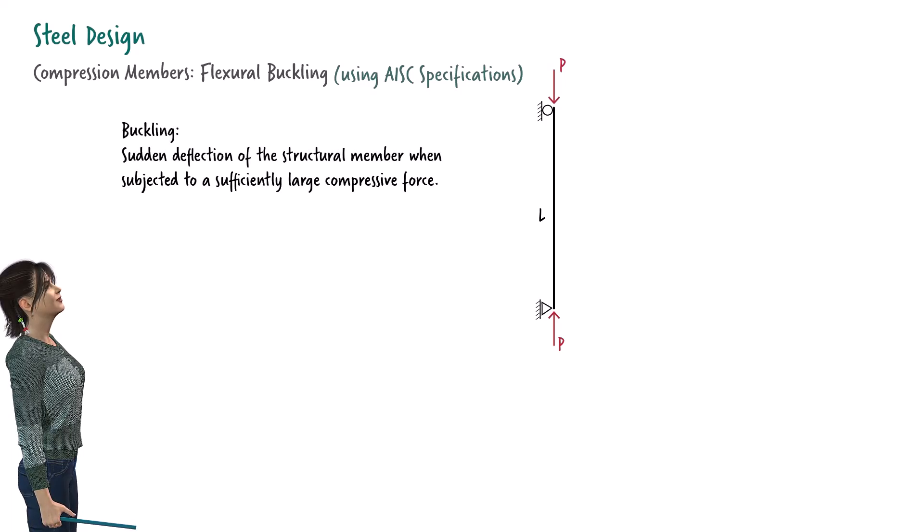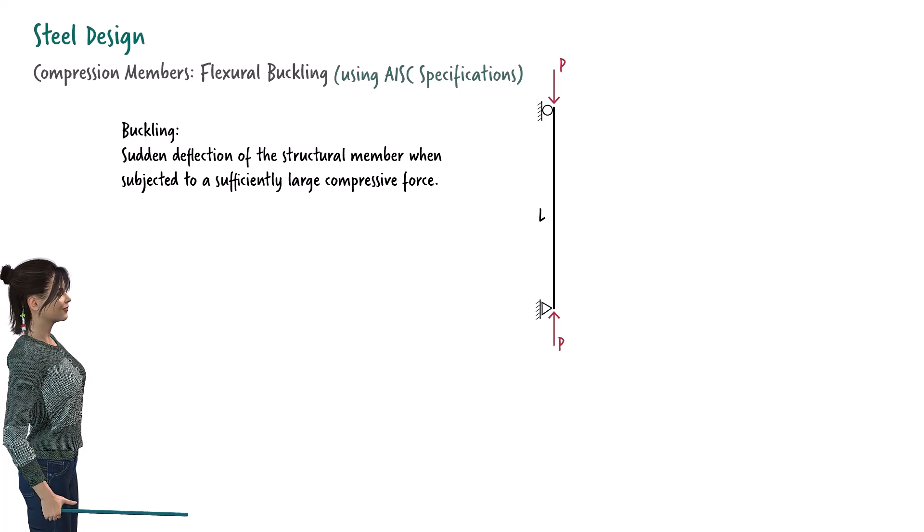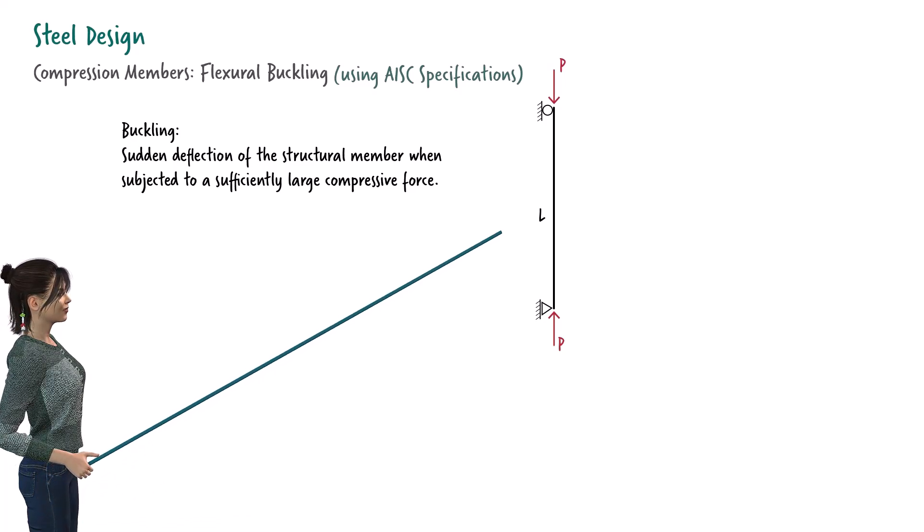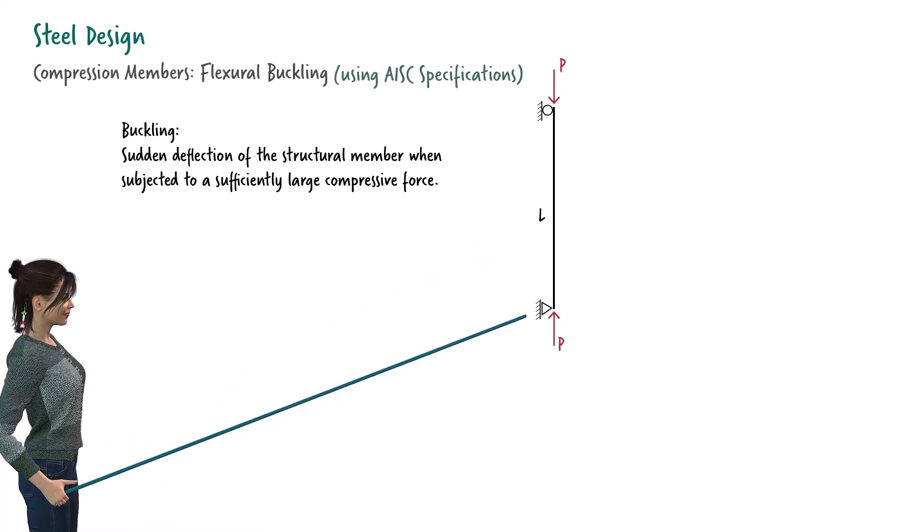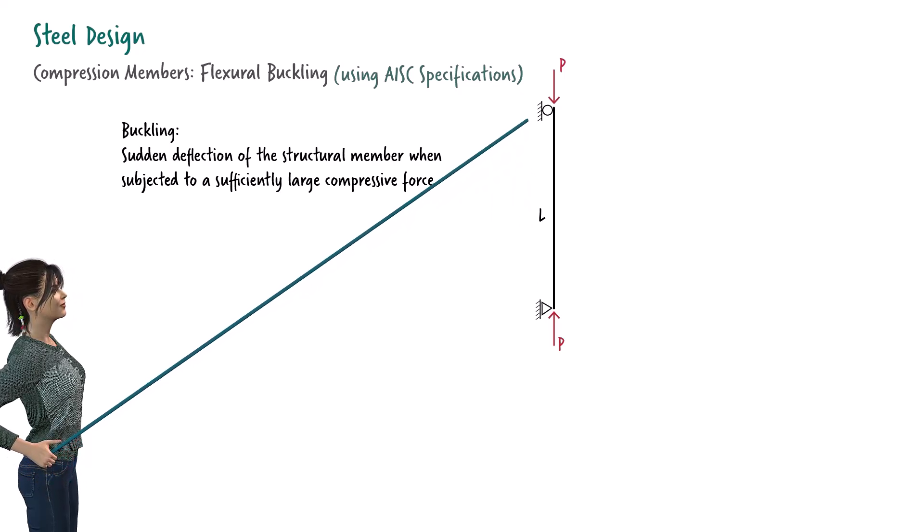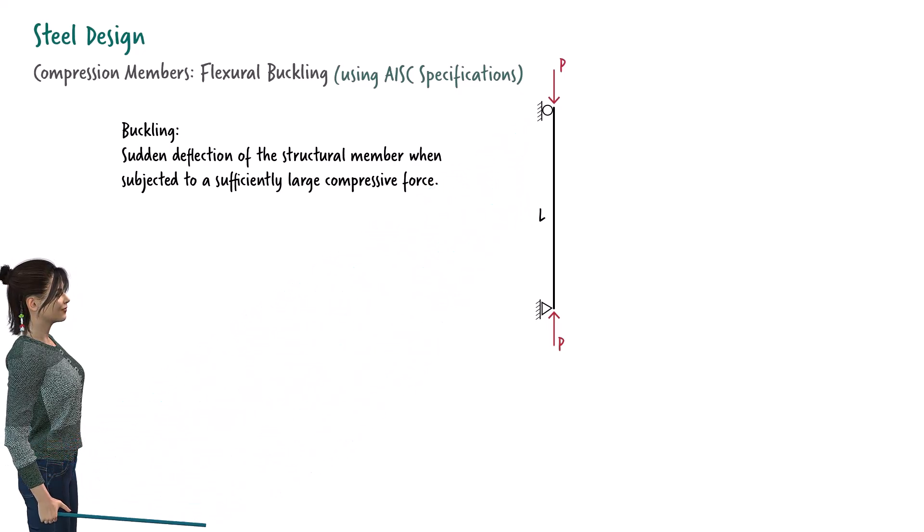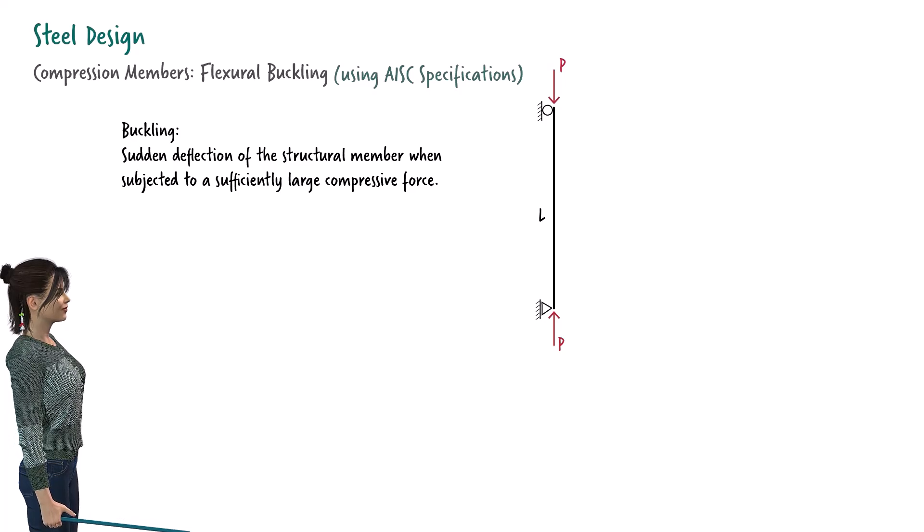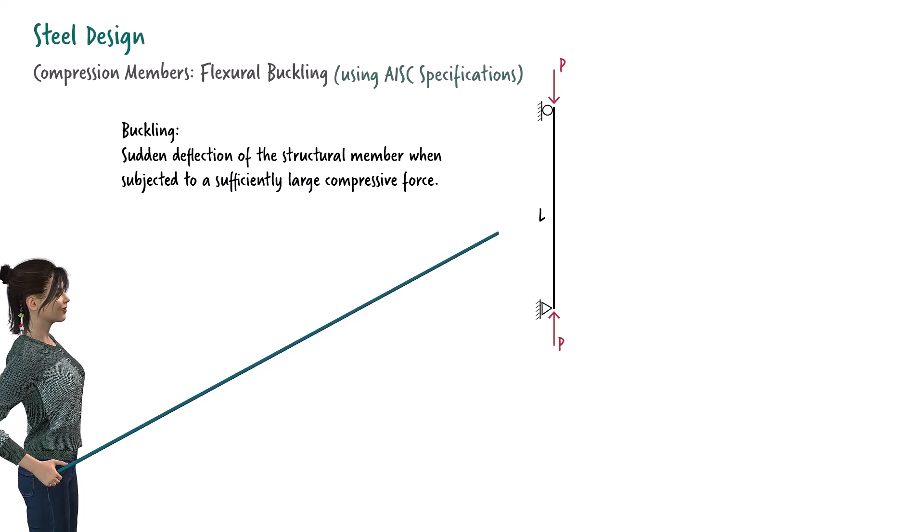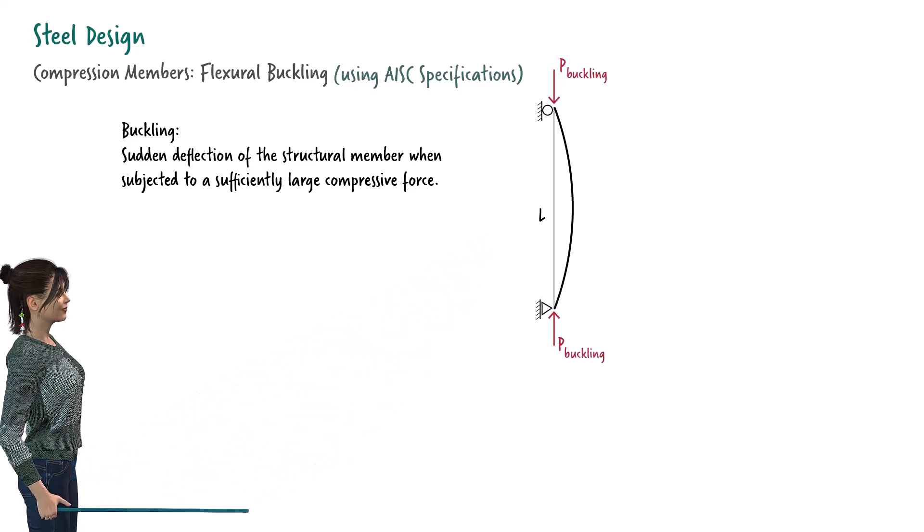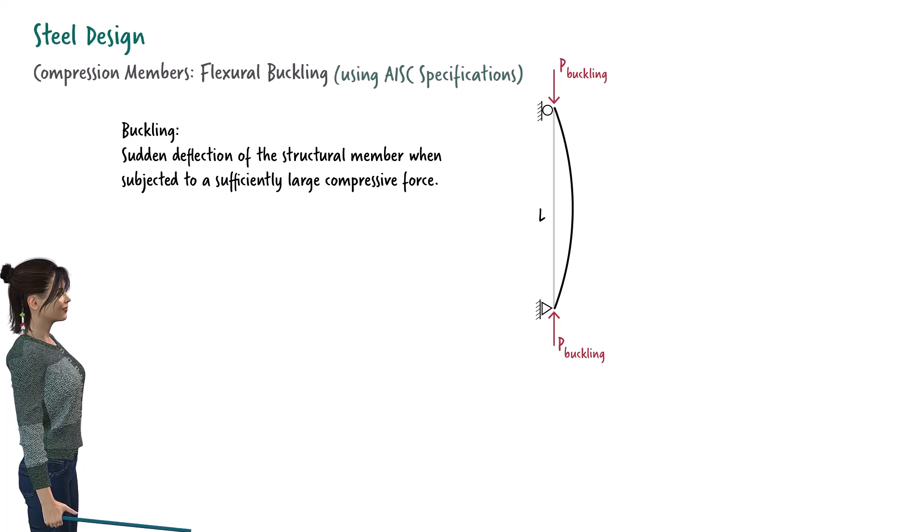Flexural buckling is a sudden lateral deflection of the member when subjected to a significant compressive force. Suppose a column is supported by a pin and a roller at its ends. When the compressive force in the column reaches a certain value, the member suddenly deflects laterally. We call this phenomenon buckling.